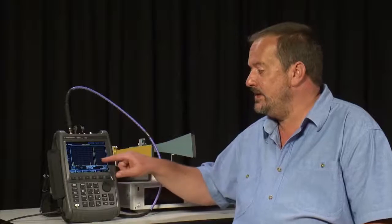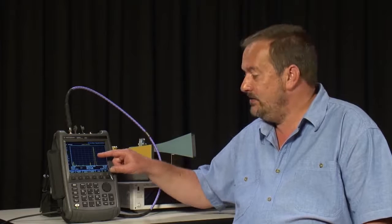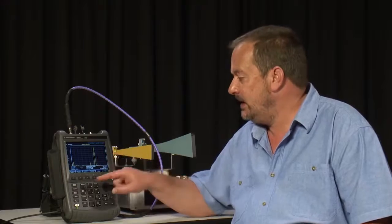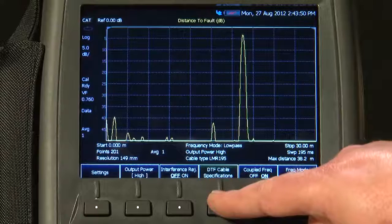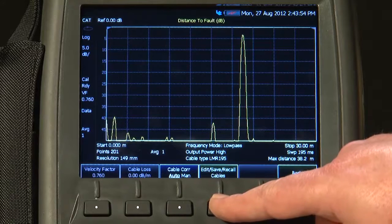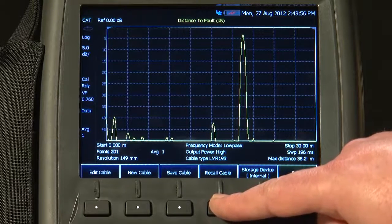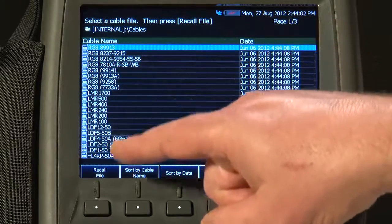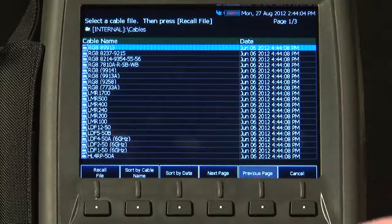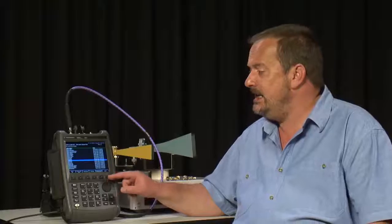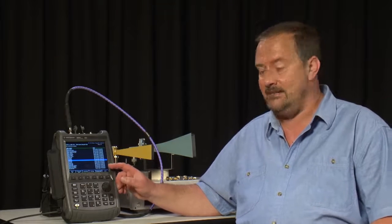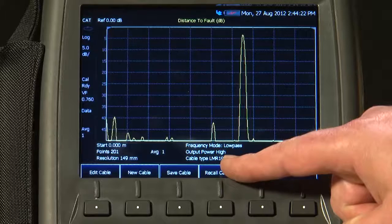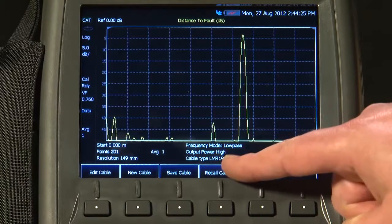Now, to ensure that the Distance measurements and Return Loss measurements are accurate, you will know that we have to tell the FieldFox what type of RF cable we are using. So if I press the Measure Setup button and DTF Cable Specifications, and then Edit Save Recall Cables, you will see we can recall a predefined cable, an RG8 or one of the LMR standards or LDF standards, directly from the FieldFox's memory. And if the cable you are measuring is not in the list, you can simply add it by entering the Velocity Factor and Loss values. You will see here, I have selected the cable type of LMR 195.